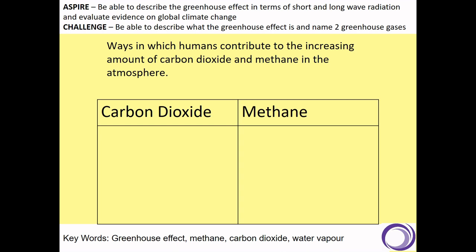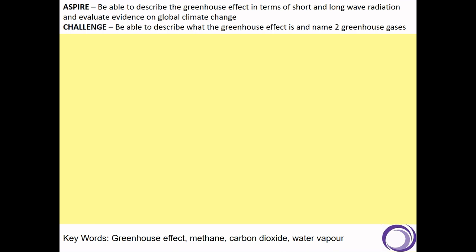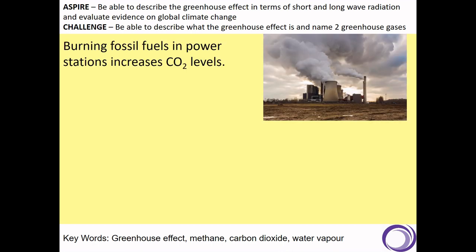Let's look at ways in which humans have contributed to the increasing amount of carbon dioxide and methane in the atmosphere. First, carbon dioxide. Burning fossil fuels, particularly in power stations, increases carbon dioxide levels. We are trying to reduce how much we rely on fossil fuels for our electricity, but we are still using them quite a lot, especially in winter. Also, the majority of our vehicles still burn petrol or diesel, so they are also increasing carbon dioxide levels. The alternatives aren't accessible enough yet to replace all of our vehicles.